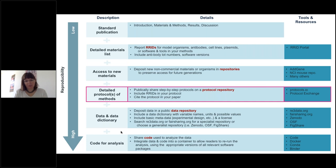There are three things we can do: publicly share step-by-step protocols in a protocol repository, include research resource identifiers, or RRIDs, in our protocol, and cite the protocol in our papers.